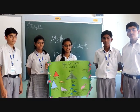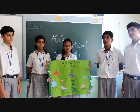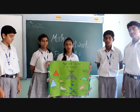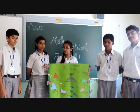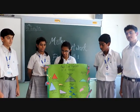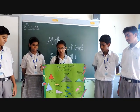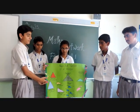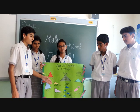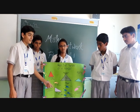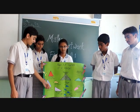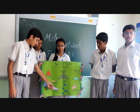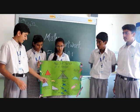Our topic is lines and angles, and under lines and angles we have taken the sub-topic angles and properties of a triangle. As you can see, there are four types of triangles: the equilateral triangle, the scalene triangle, the isosceles triangle, and the right angle triangle.